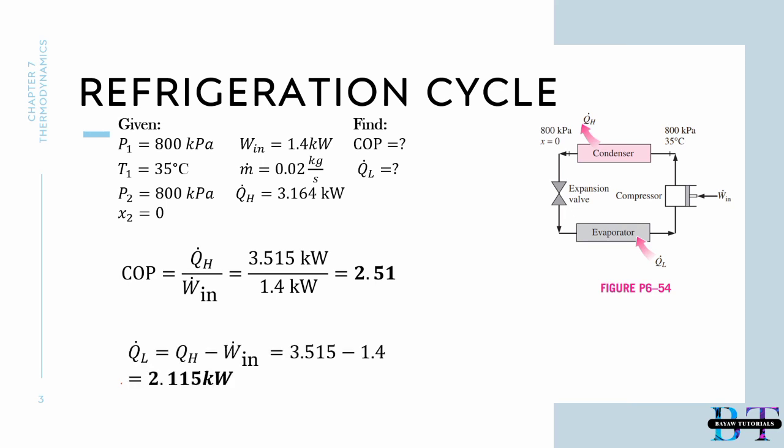Next, let's calculate our heat added to our evaporator. That will be Q_H minus our work in, and that will be 3.515 minus 1.4. You'll have an answer of 2.115 kilowatts.